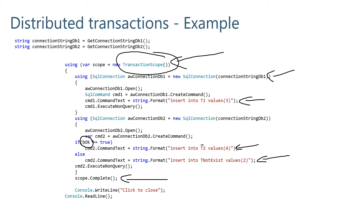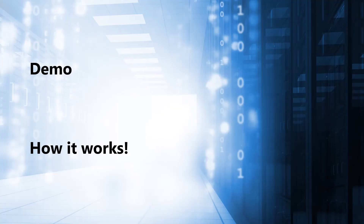When we have the table, the transaction will be completed. And when we don't have this table, the distributed transaction will not be completed, because that table does not exist in the secondary database.